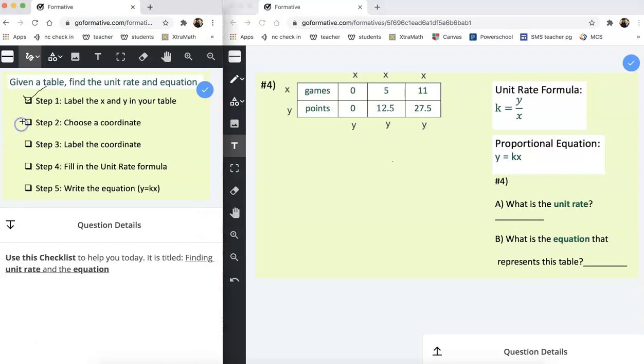Step two says to choose a coordinate so I'll do that next. Remember you can't use 0, 0 to find the unit rate because 0 divided by 0 gives you undefined. So don't use 0, 0 to find the unit rate and then I'm going to choose this set. Those are smaller numbers than the 11 and 27.5 and then I'll type this point, this coordinate, 5 comma 12.5.